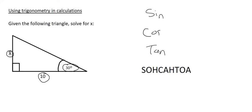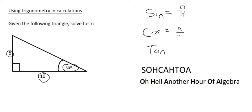SOHCAHTOA, or you could use Oh Hell, another hour of algebra, or whatever you like. But we need to remember that sin is the opposite over hypotenuse, cos is the adjacent over the hypotenuse, and tan is the opposite over the adjacent.